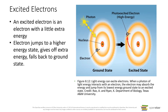An excited electron goes from its normal state - what we call the ground state - to a higher energy state. And then very, very quickly, like within a millionth of a second, it goes back down to its ground state. When it goes up to the higher energy state, it is absorbing a little bit of energy. As it falls back down to the ground state, it gives off that energy. Notice the electron does not leave the atom - it stays in the atom, it just gets excited for a second.